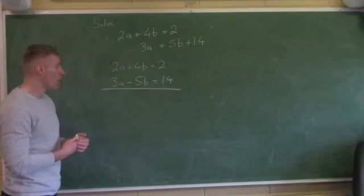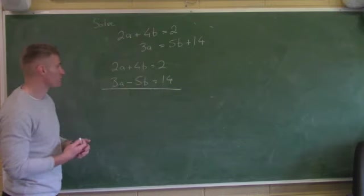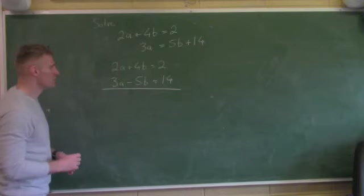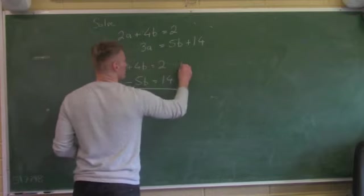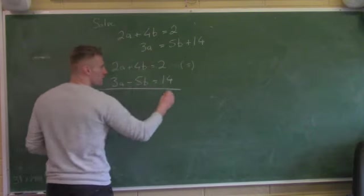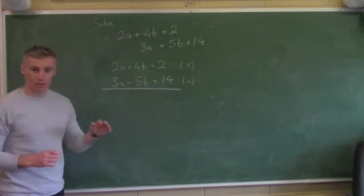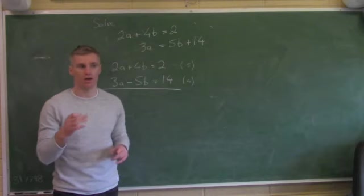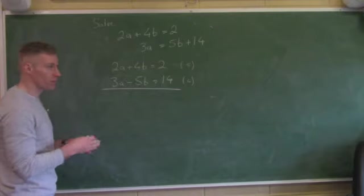I need to get rid of either my A's or my B's. I see that B is positive in one equation and negative in the other, so I'm going to get rid of the B's. I need to make the numbers in front of my B's the same: 4 and 5 are both multiples of 20. If I multiply the top line by 5, I'll get 20B. If I multiply the bottom line by 4, I'll get minus 20B.